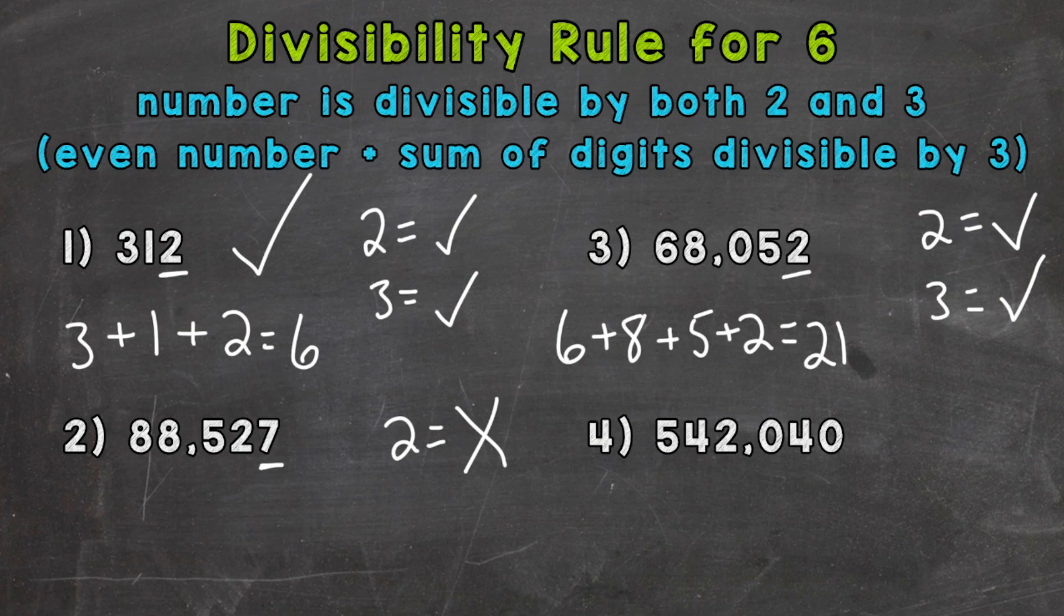68,052 is divisible by both 2 and 3, therefore divisible by 6.